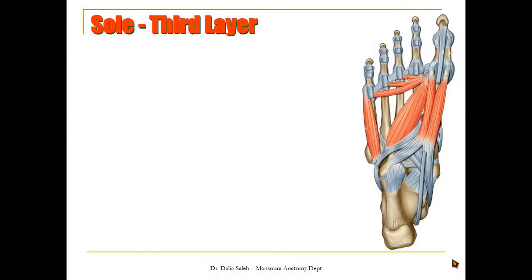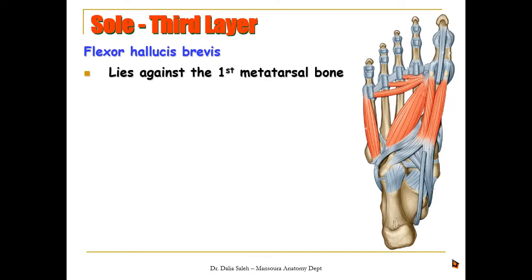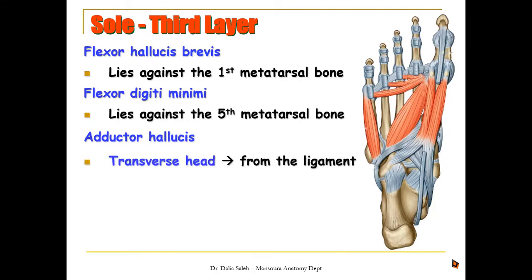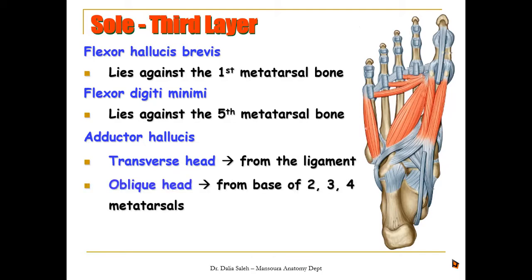The third layer of the sole contains three muscles. The flexor hallucis brevis lies against the first metatarsal bone. The flexor digiti minimi lies against the fifth metatarsal bone. The adductor hallucis has two heads: the transverse head arises from the ligaments holding the heads of the metatarsal bones together, and the oblique head arises from the bases of the second, third, and fourth metatarsals. Both heads unite and insert into the base of the proximal phalanx of the big toe.